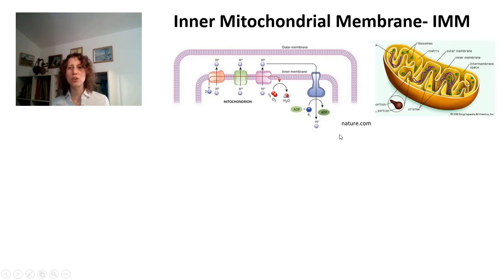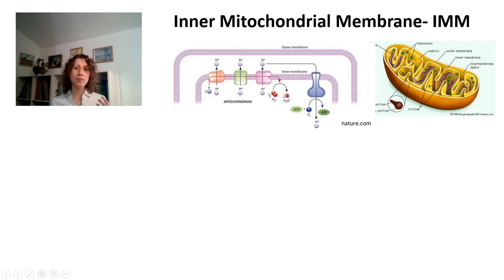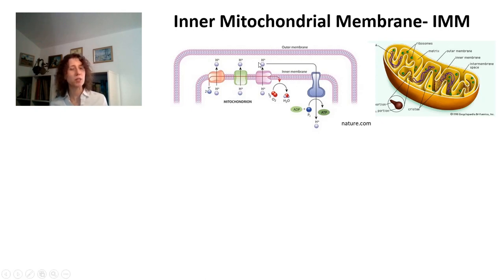Actually, if you look at Encyclopedia Britannica, they got it a little bit more right because they put these components on the crista and not in the part of the inner membrane that faces the intermembrane space. So if the respiratory chain components are present mostly in the crista, you would think that the membrane potential is formed mostly in crista. And that is correct.